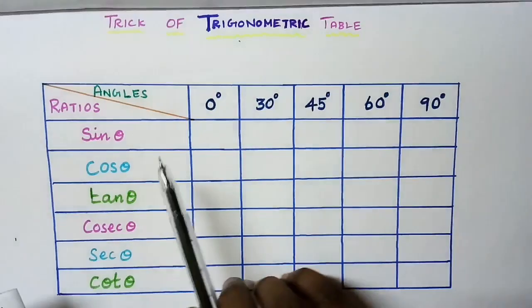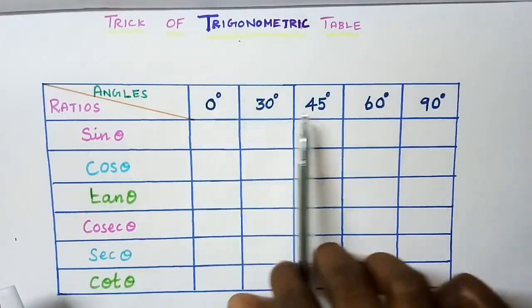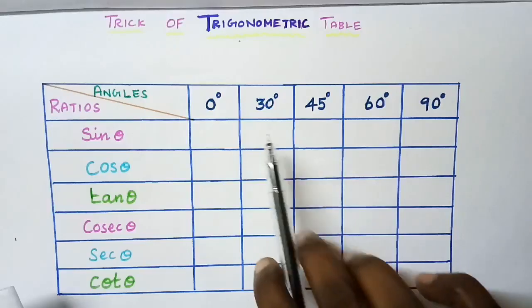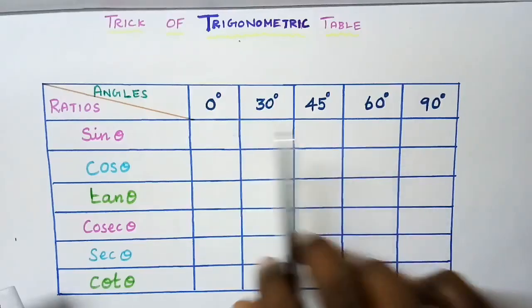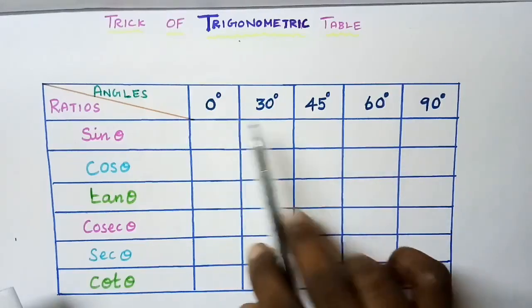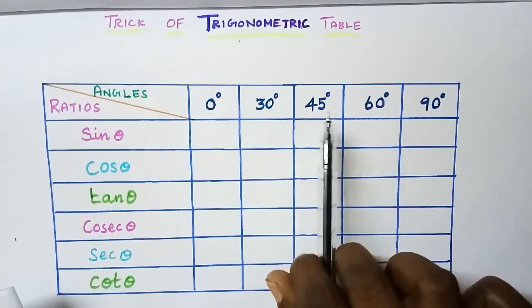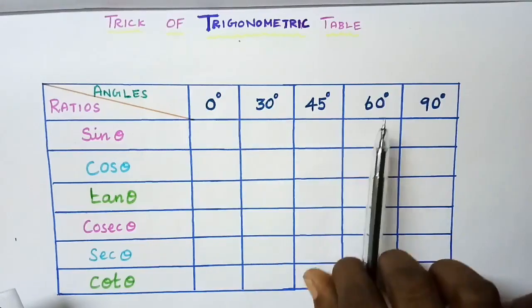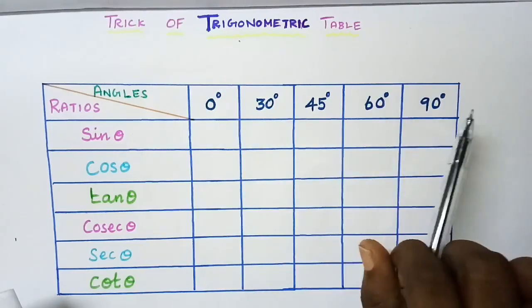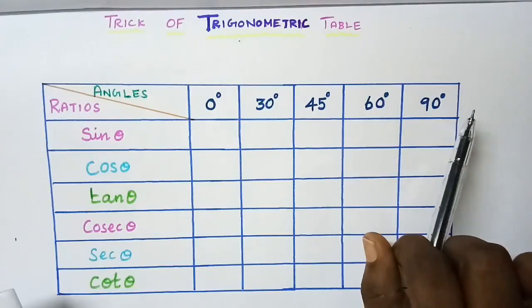Here the angles are written horizontally in increasing order: 0 degree, 30 degree, 45 degree, 60 degree, and 90 degree.